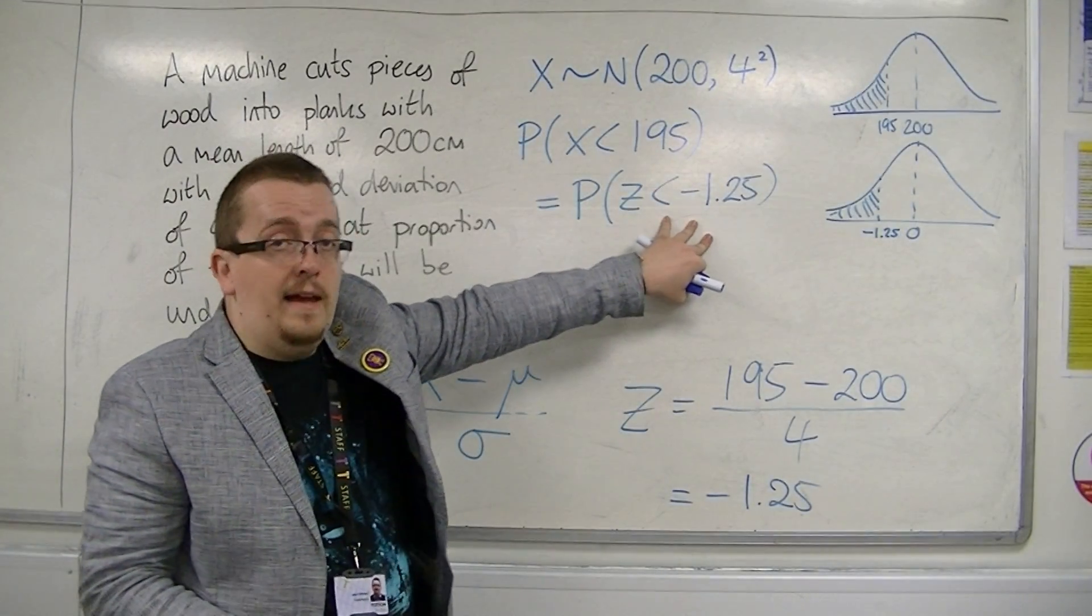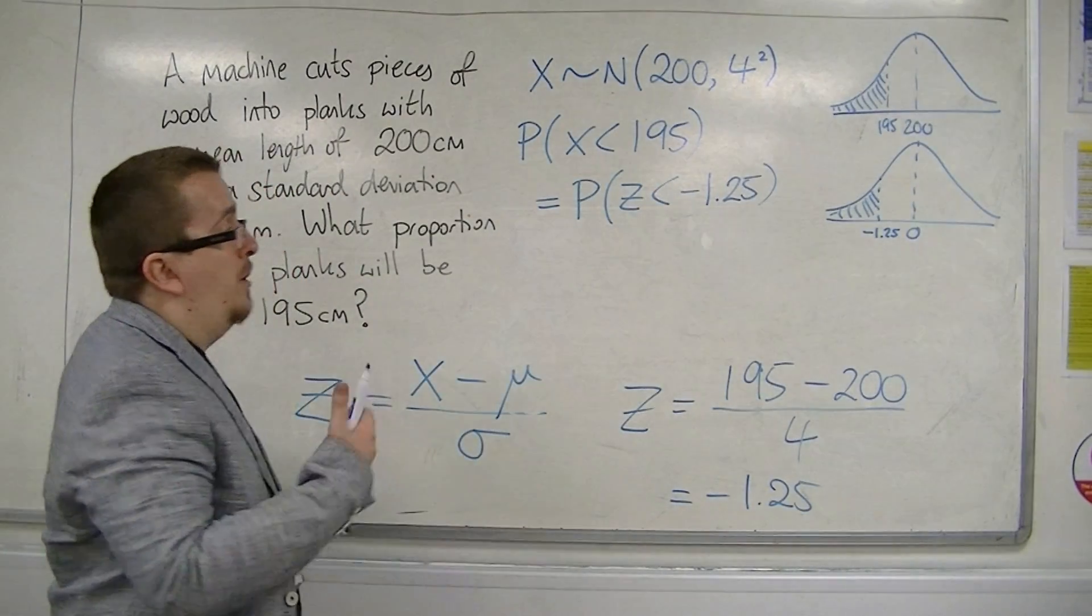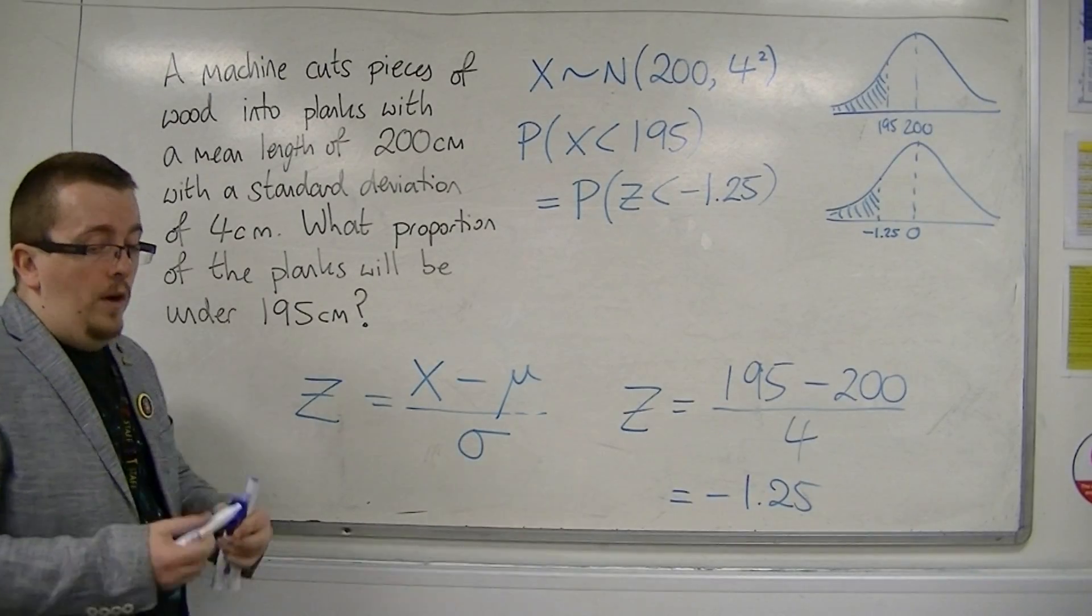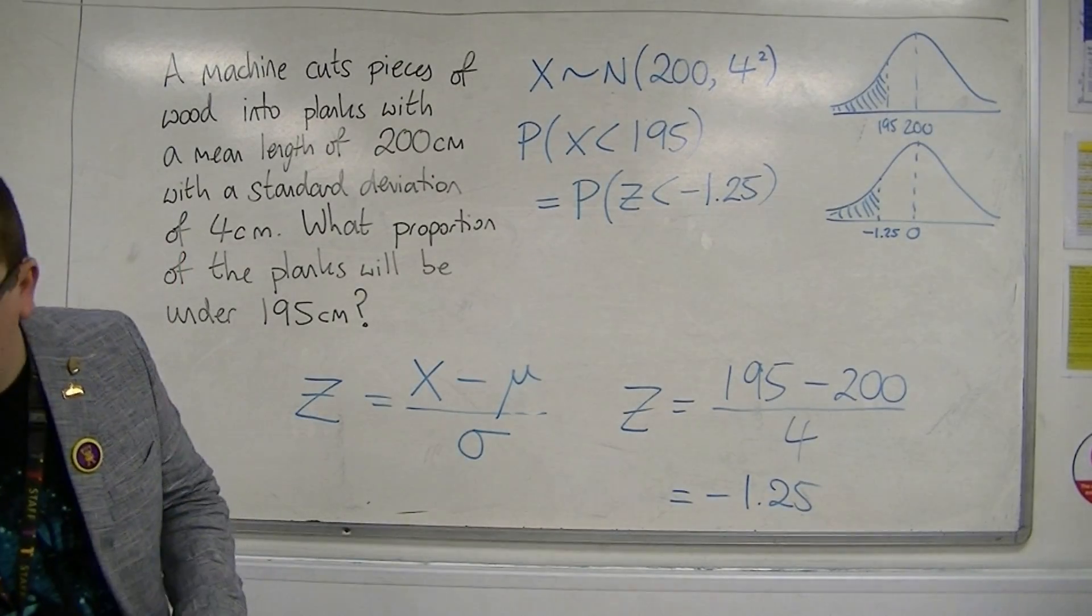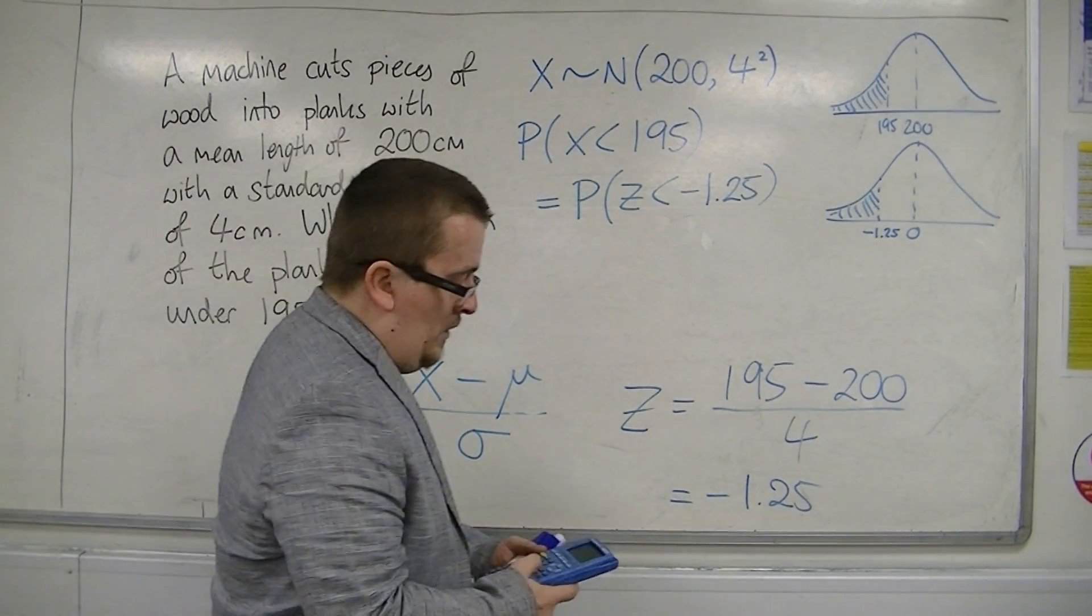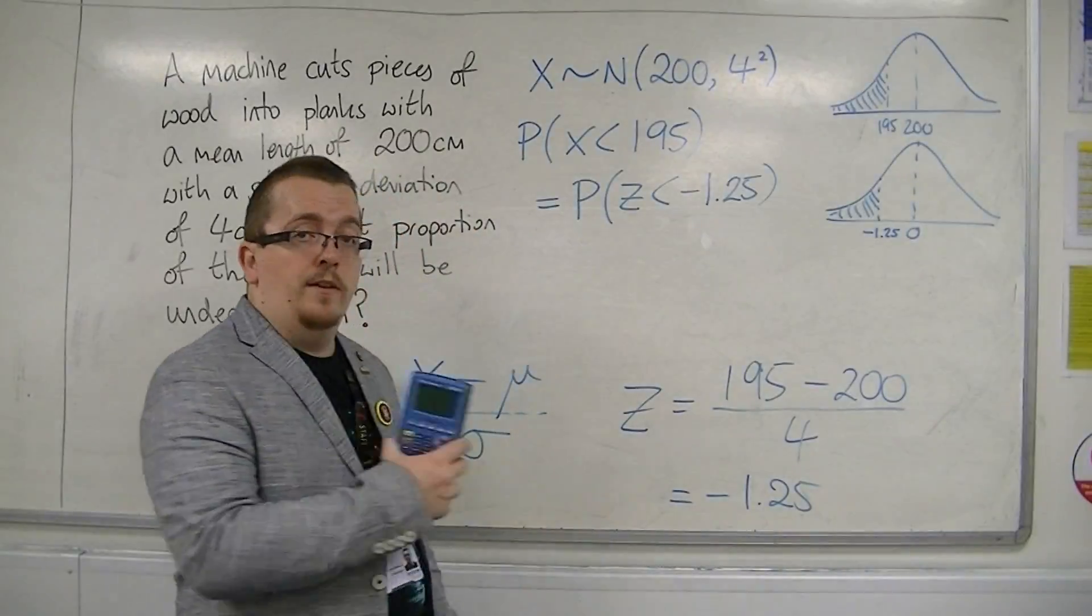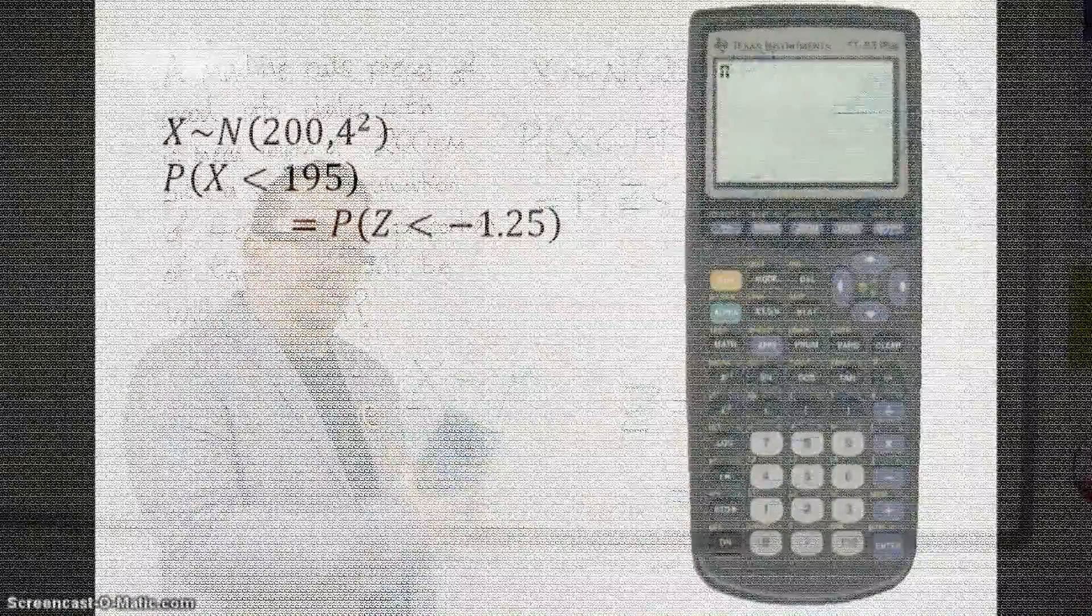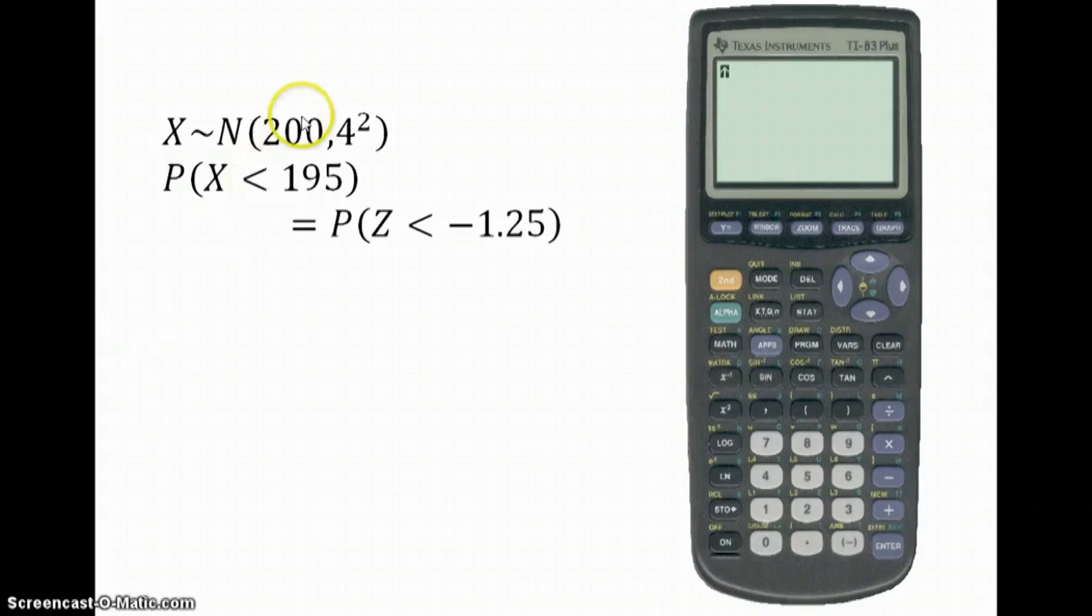So, to find that, I can either use the probability tables, or I can use the TI-82 stats, which I'm going to show you how to do now. We're working with a normal distribution with a mean of 200, and a variance of 4 squared. And we want to find the probability that X is less than 195, and we've just found that the Z statistic will be minus 1.25.